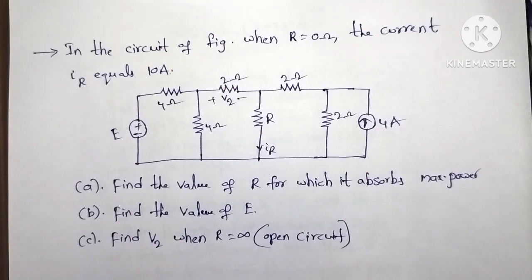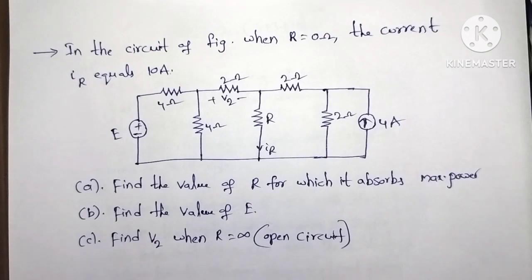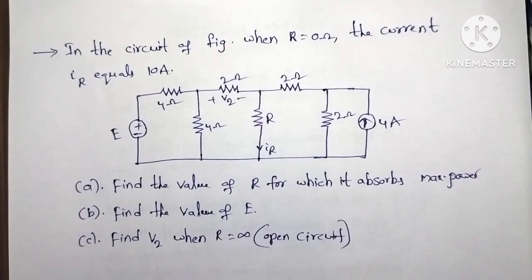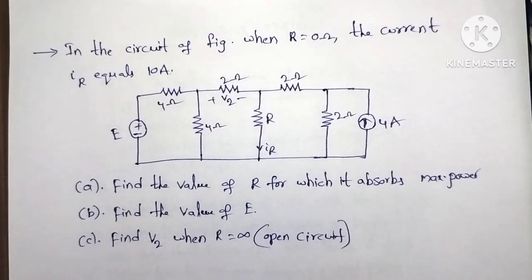In the circuit shown in the figure, when R equals 0 ohms, the current IR equals 10 amps. We need to find out 3 points: first, find the value of R for which it absorbs maximum power; second, find the value of E; and third, find V2 when R equals infinity, i.e., when it is open circuit.